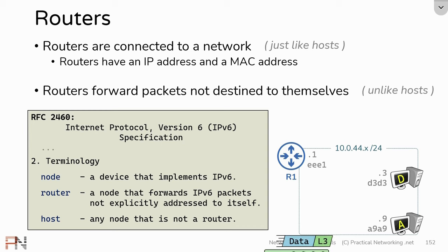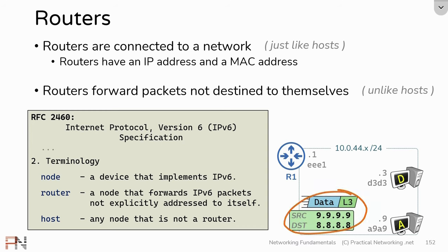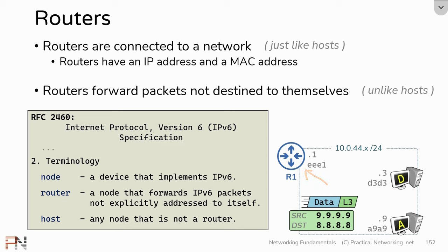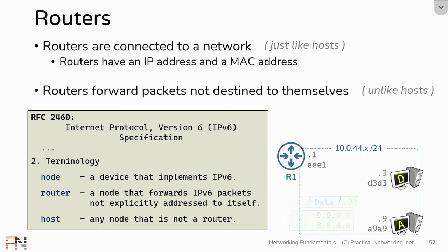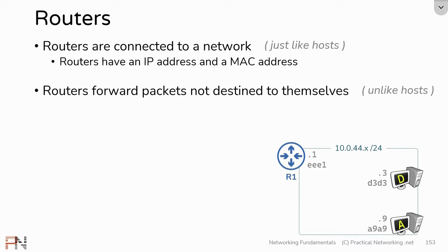For example, if this packet were to magically appear on this network and arrive on host D, host D would take a look at the destination IP address and realize that it is not itself and would simply drop this packet. But if this packet were to arrive on Router 1, Router 1 would recognize that it is not destined to itself, but would still try and deliver this packet to the appropriate destination. That is how hosts and routers are different.